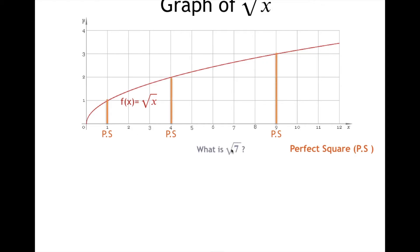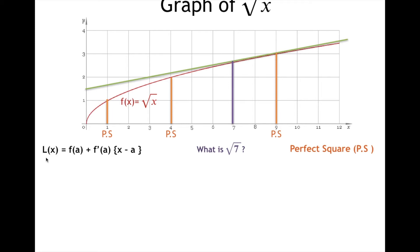What we need to find is the square root of 7. To find it, we use the two closest perfect squares to 7. First, we will use 9. This green line will help us find the square root of 9, which is 3. The formula we're going to use is L(x) = f(a) + f′(a) · (x − a).